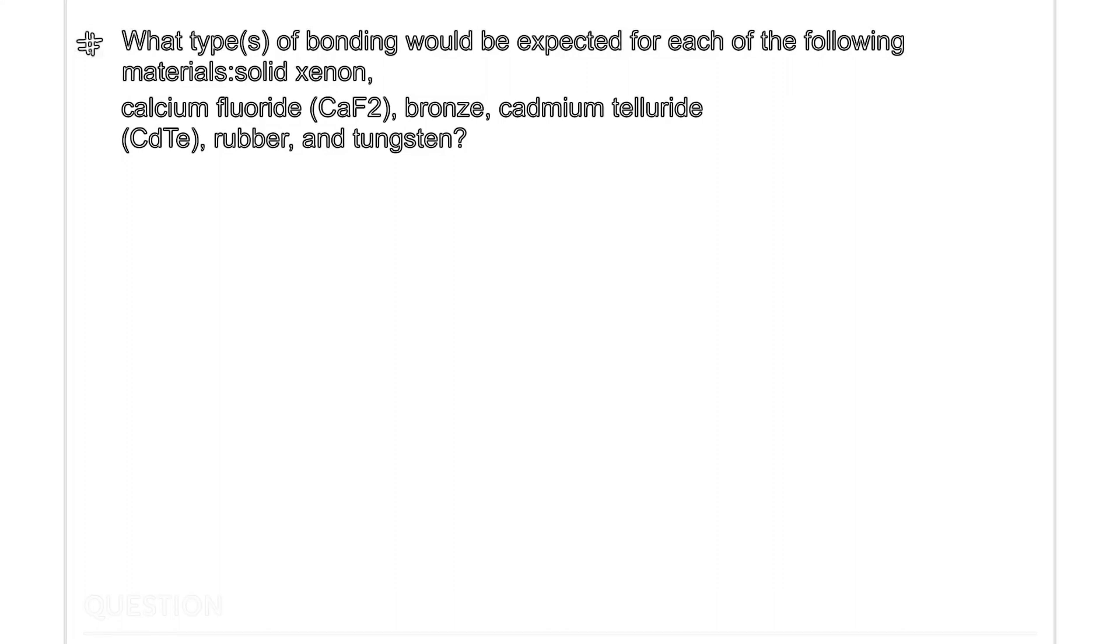Hello everyone, let's solve a problem that is based on the primary interatomic bonds and their types, and it's related with material science. What types of bonding would be expected for each of the following materials? First is solid xenon, then we have calcium fluoride, then bronze, then cadmium telluride, then rubber and then tungsten.